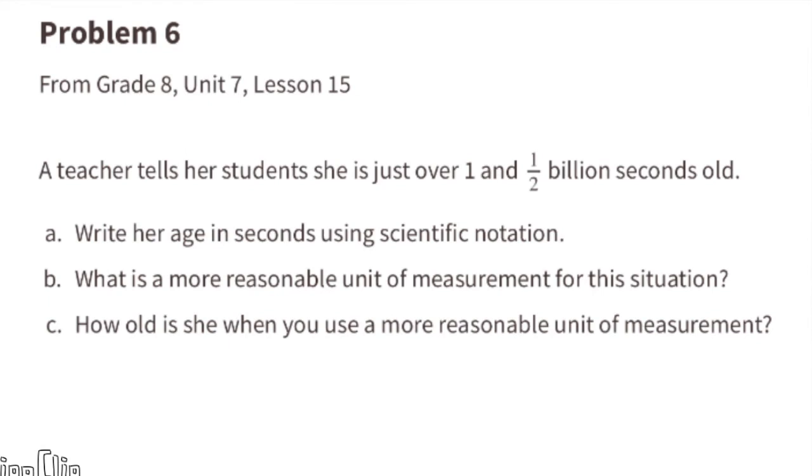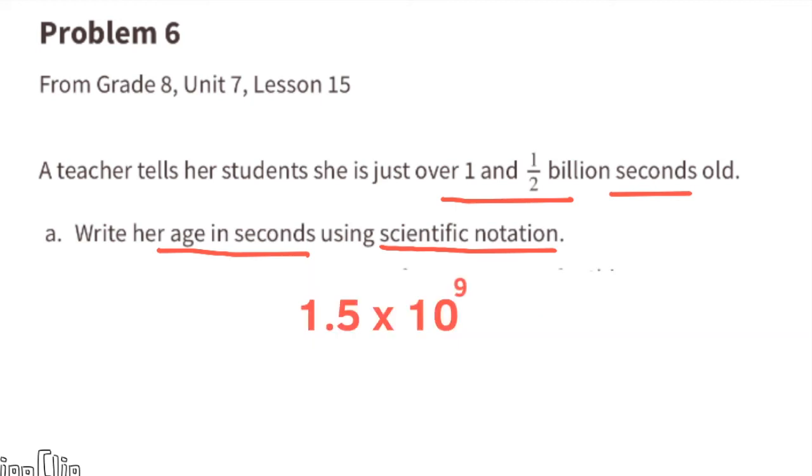Problem number six from eighth grade, unit seven, lesson 15. A teacher tells her students she is just over one and a half billion seconds old. A: Write her age in seconds using scientific notation. One and a half billion or 1.5 billion can be expressed as 1.5 times 10 to the ninth power.